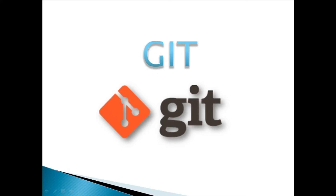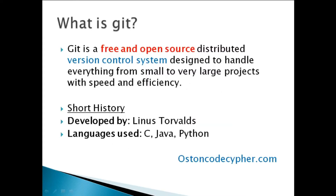This is what we're going to be looking at in this video series, starting with: what is Git? Git is a free and open distributed version control system designed to handle everything from small to very large projects with speed and efficiency. Those two words — speed and efficiency — are some of the key reasons why this tool was created. Two other highlighted words in the definition are: free and open source.